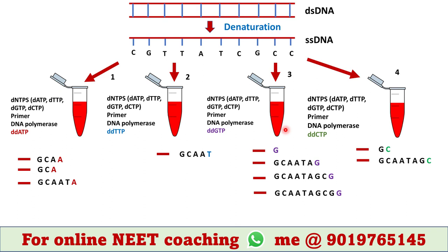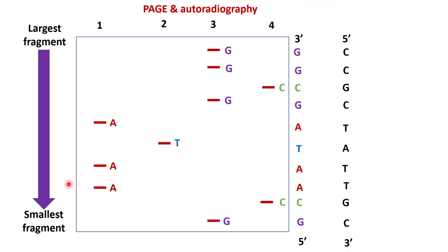Each tube contains different fragments of DNA that all have the same starting point but different end points. These products are run on polyacrylamide gel electrophoresis (PAGE). Each lane of the gel contains the contents of each tube — tube 1, tube 2, tube 3, and tube 4. DNA fragments are separated on PAGE based on their size.